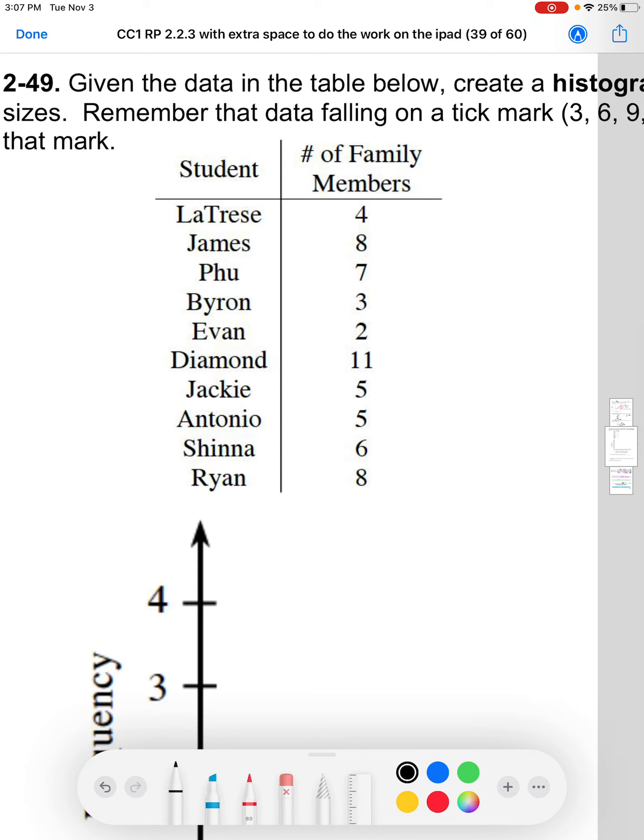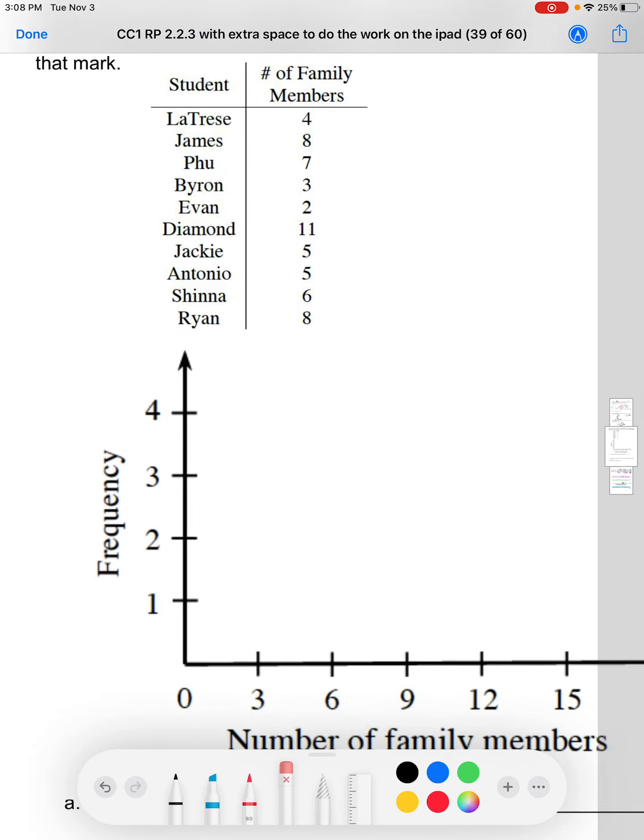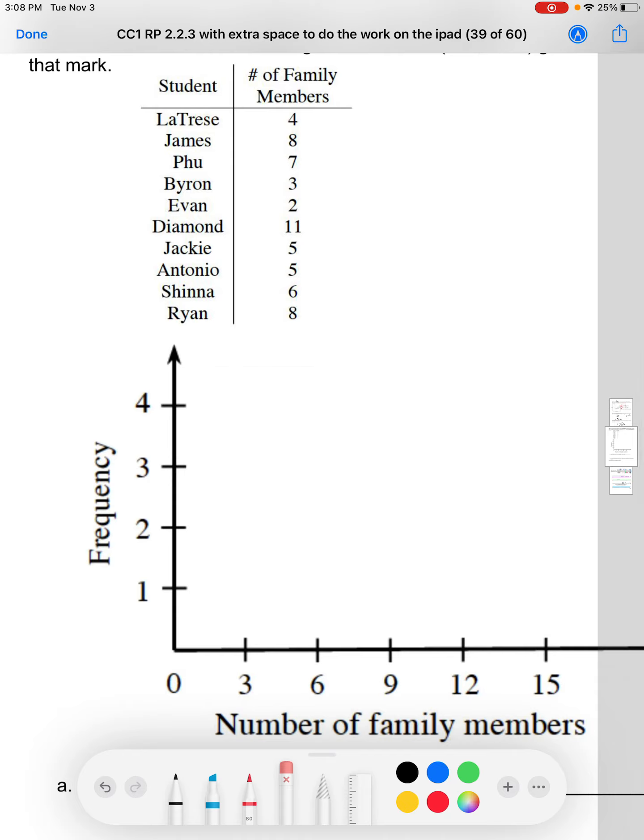If we take a look at these, we have, for example, Latrice. Latrice has the number of family members, 4. They have 4 people in their family members. James has 8. I would guess it's Phu or Fu, has 7, Byron 3, right? So we have all these, and what we're trying to do is we're trying to figure out where do they go kind of down here.